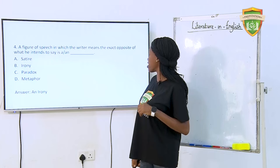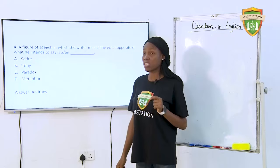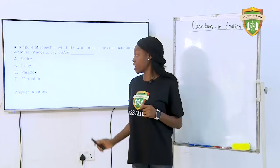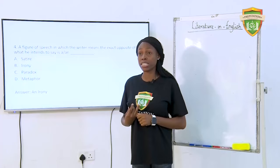Question 4: A figure of speech in which the writer means the exact opposite of what he intends to say is — A. Satire. B. Irony. C. Paradox. D. Metaphor. The answer is irony. Irony has to do with saying the opposite of what the speaker intends.